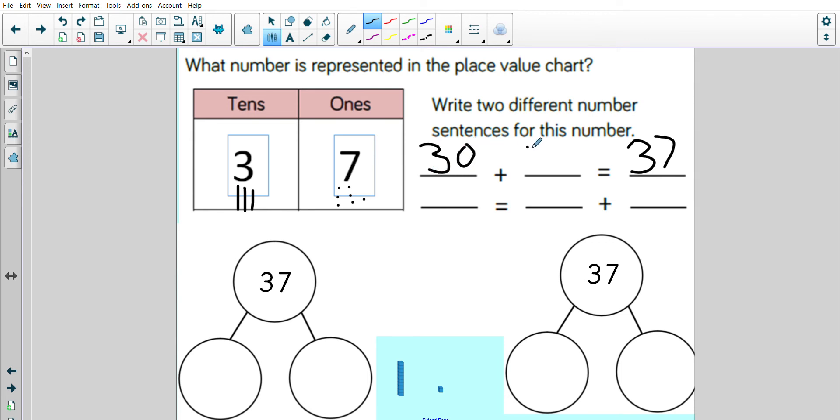37. I made it using 3 tens and 7 ones. If the number I made was 37, can you represent this in a different way, finishing my number sentence?